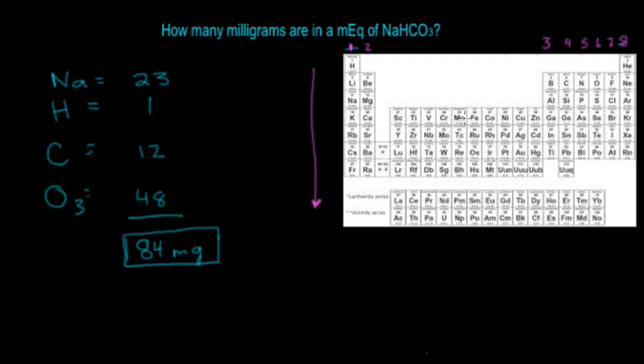Group 1 has a plus 1 charge. Group 2 has a plus 2 charge. Group 3 has a plus 3 charge. Group 4 has a 0 charge.